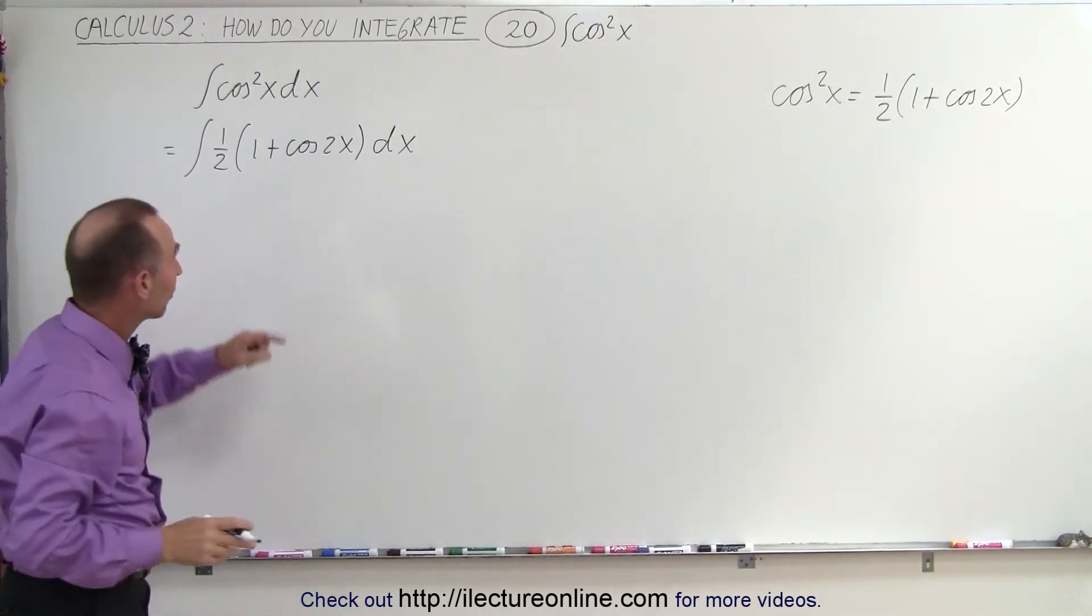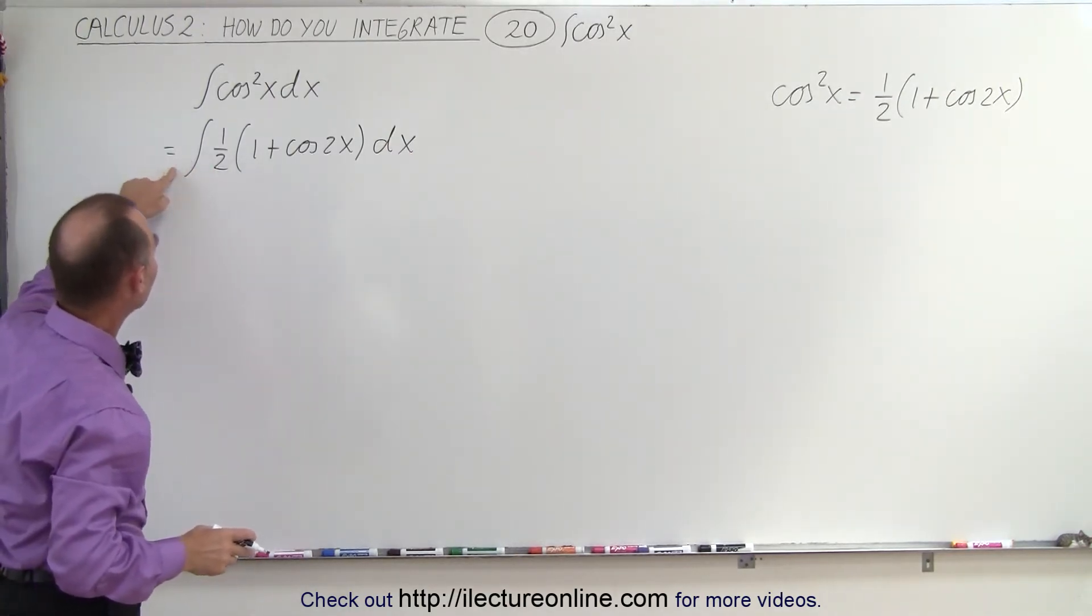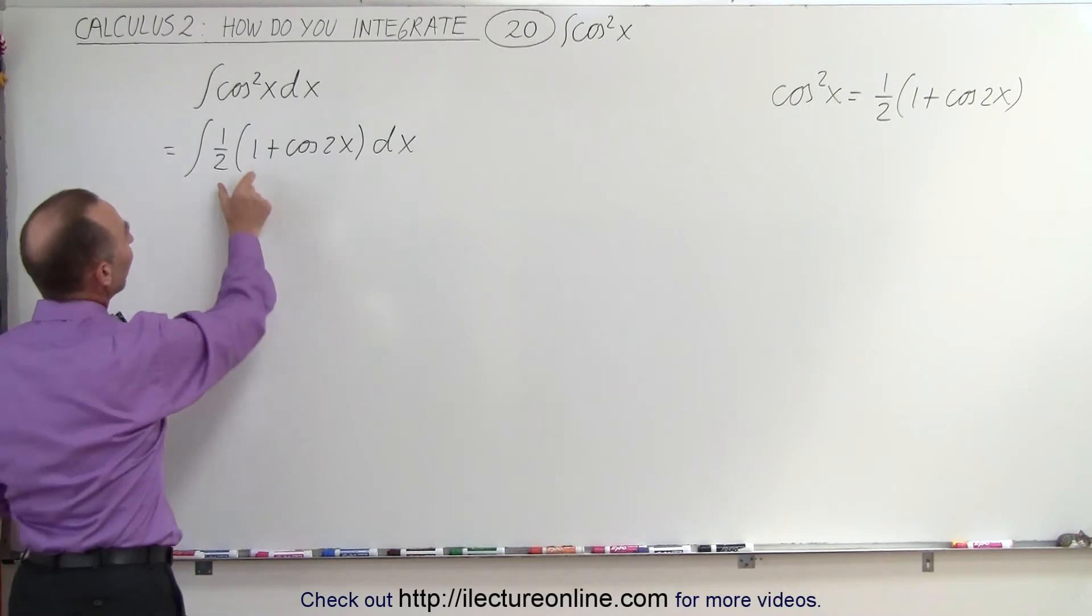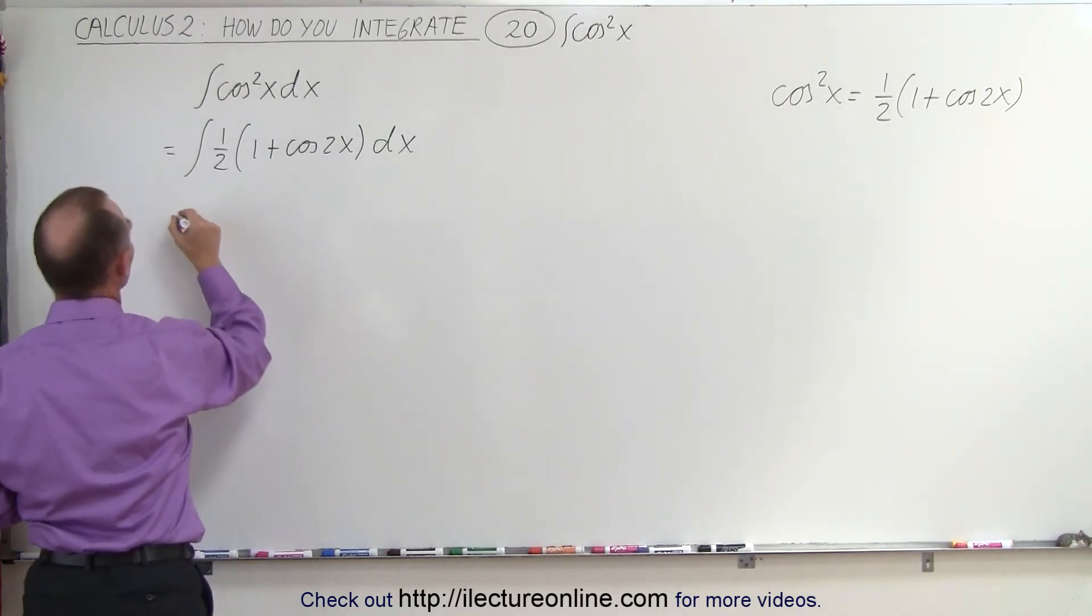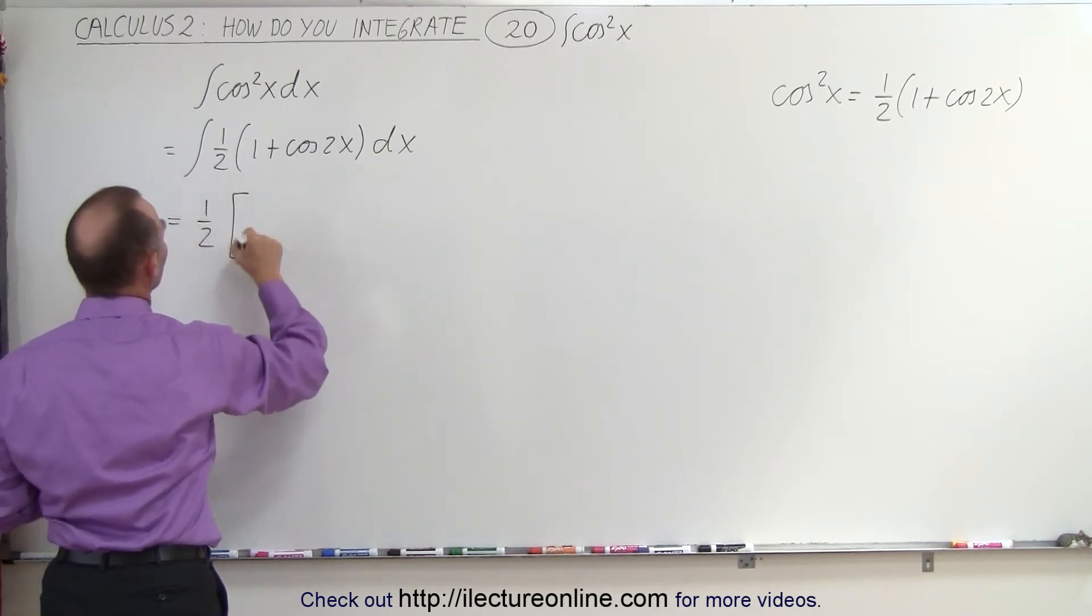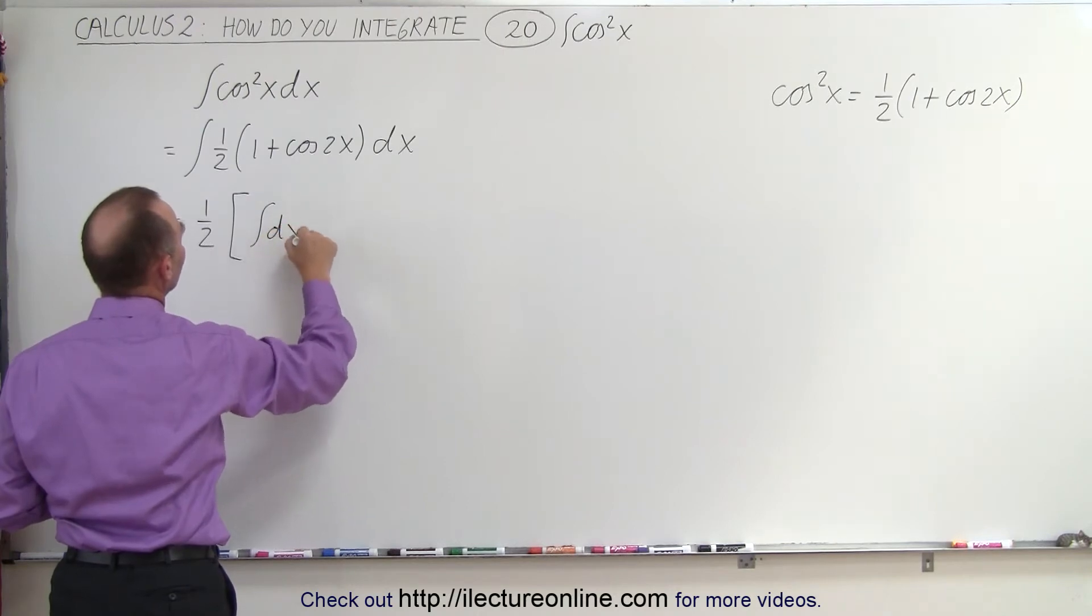And then you realize that the one-half is a constant that can come outside the integral sign. And then we have the sum of two functions so we can split it up into two separate integrals. So this becomes one-half times the first integral would be the integral of one times dx, which is simply x.